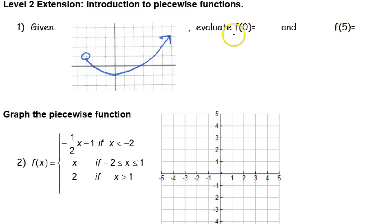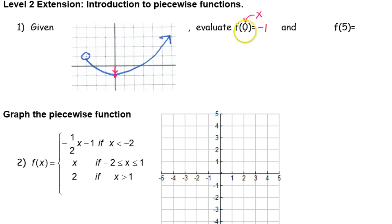What is the value of this function at zero? In this notation, the zero is an x value, so let's go over to an x value of zero and see where the function is. At an x value of zero, the function is at negative one — the y value is negative one. So the value of the function at zero is negative one. They're giving you the x value and asking for the y value.